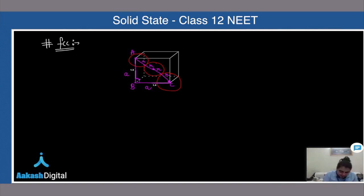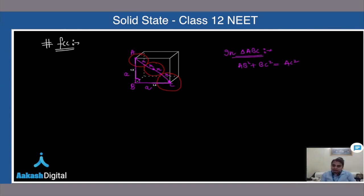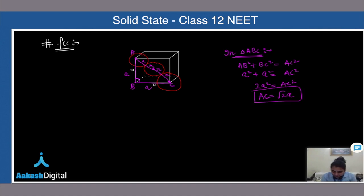The angle at B is 90 degrees in a cubic unit cell, so triangle ABC is a right-angle triangle. By Pythagoras: AB² + BC² = AC². Substituting: a² + a² = AC², so AC² = 2a², giving AC = √2·a.